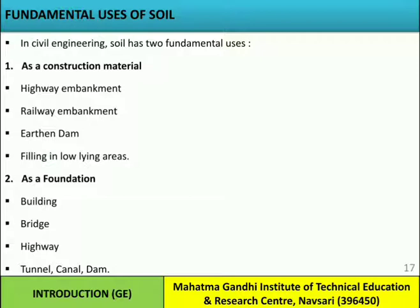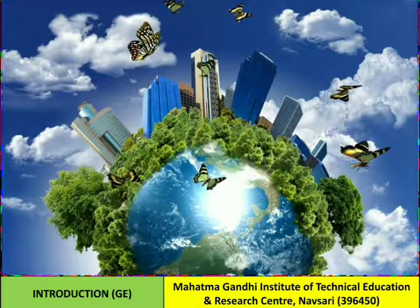Soil has two fundamental uses in civil engineering: number one, as a construction material — for example, highway embankment, railway embankment, earthen dam, and filling in low-lying areas; and number two, as a foundation — for example, building, bridge, highway, tunnel, canal, and dam. That covers all the concepts in this introduction chapter. Thank you.